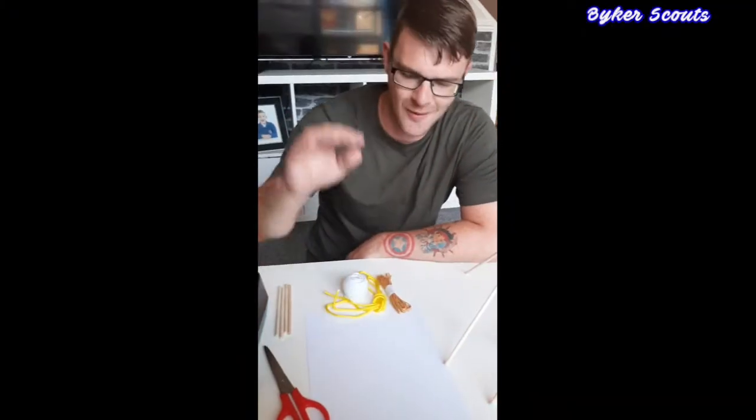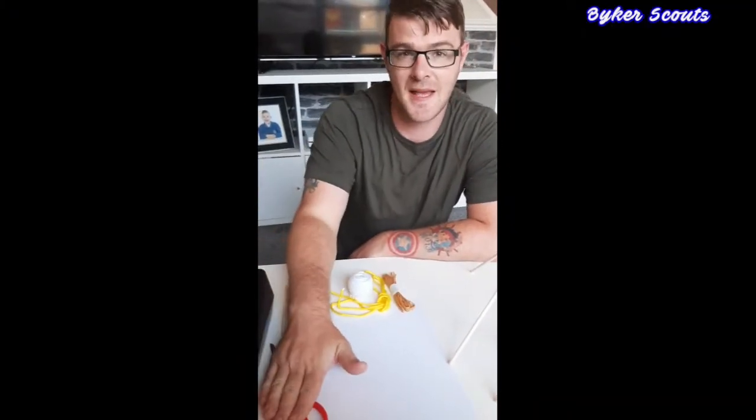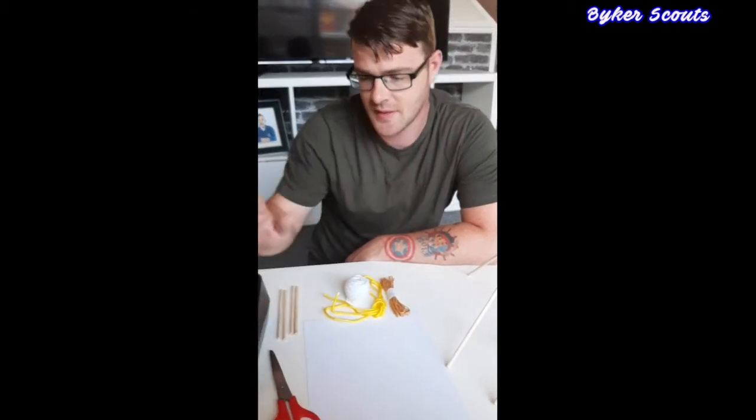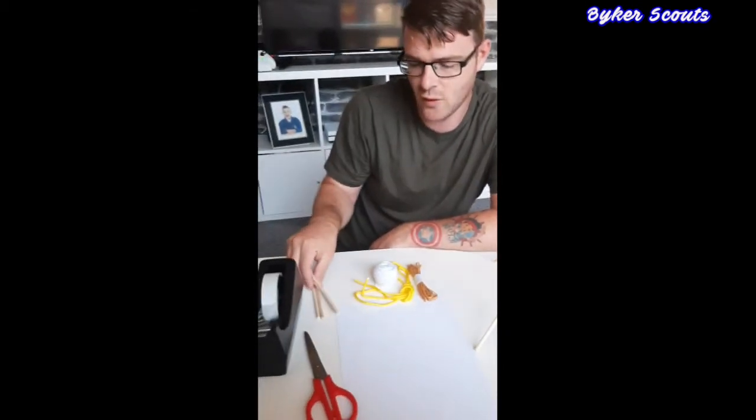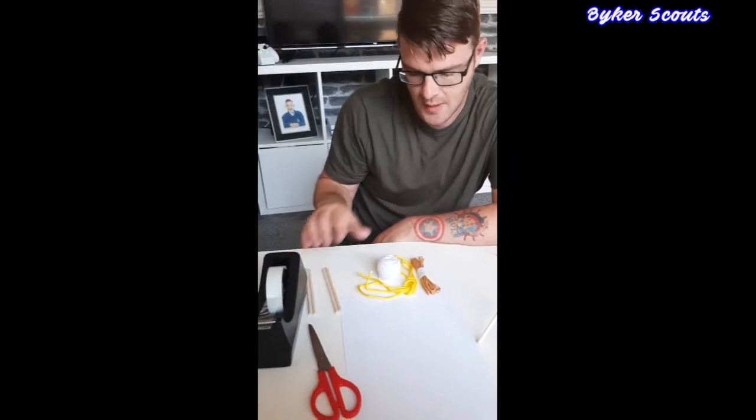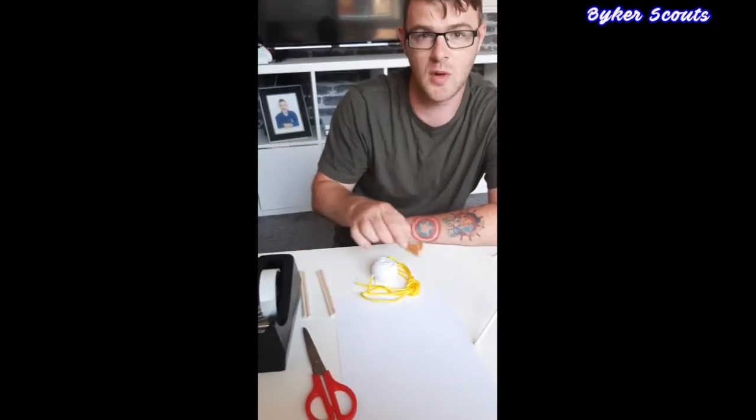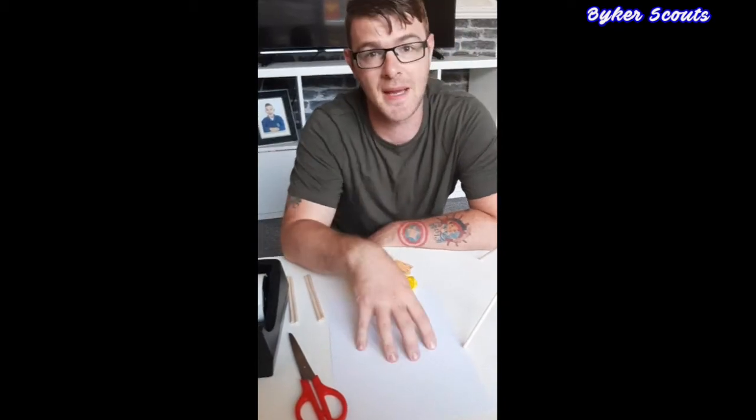In order to make these, what you need is some scissors, but be careful with them and get an adult's help if needed, some sellotape, your four wooden dowels, some string, paracord, or twine, or something you can tie with, and some paper.